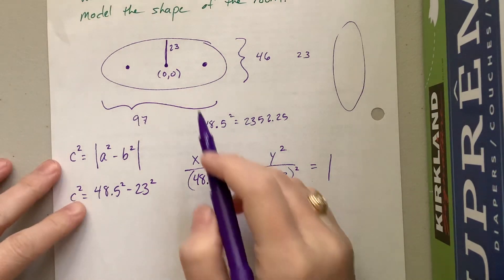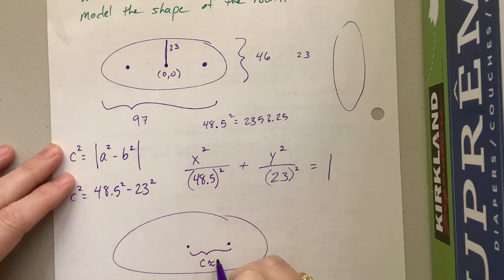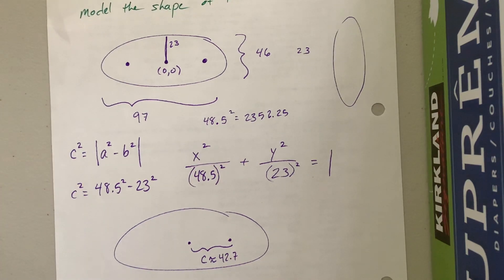Okay, so that means, what does that mean? That means that here's the center, and here's a foci, and this is that c value. So c is approximately about 42.7. And so where are the foci? They're 42.7 feet from the center. How far are they from each other? What is that, 85.4 feet? Can I multiply? Not very well.